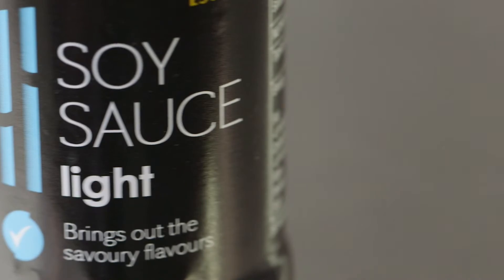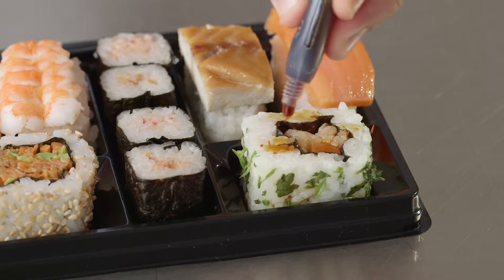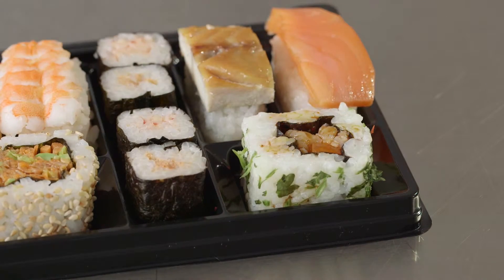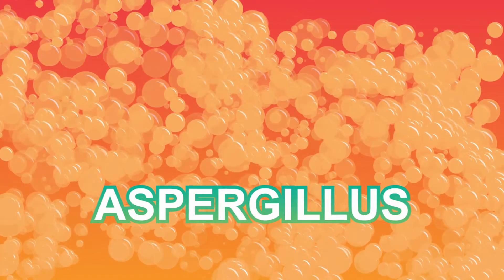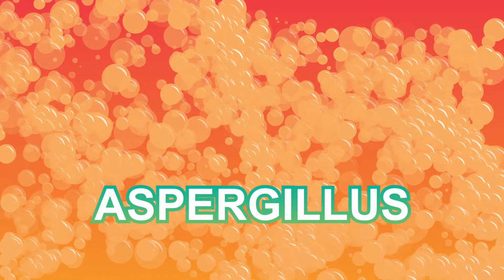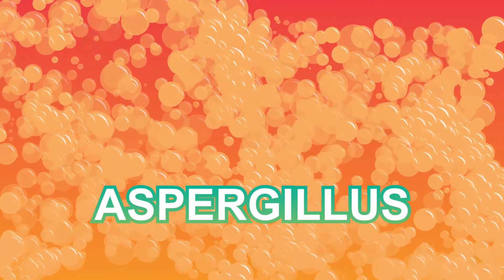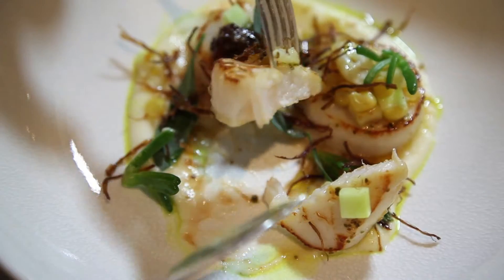more often used as a cooking ingredient. Have you ever wondered what it's made of? It starts with soy beans. They are boiled to soften them and then mixed with grains such as wheat, barley, or rice, and they're